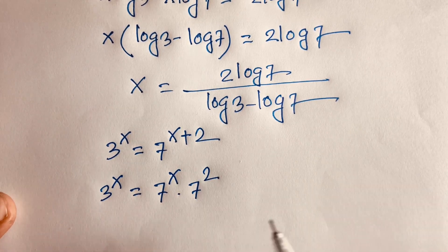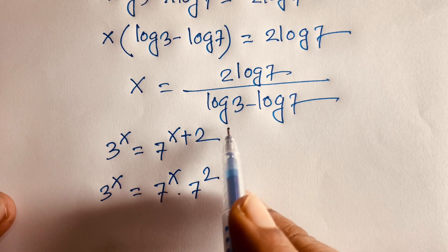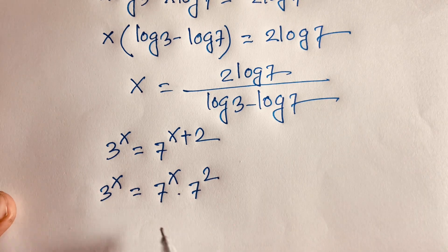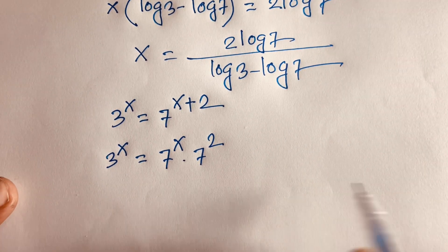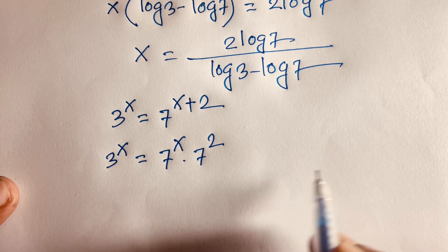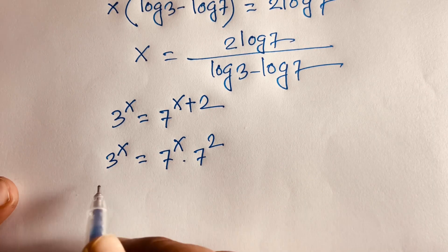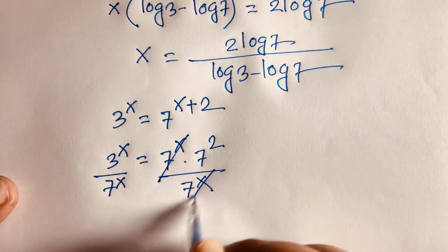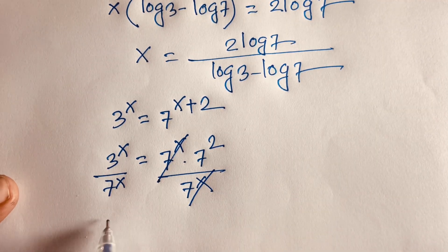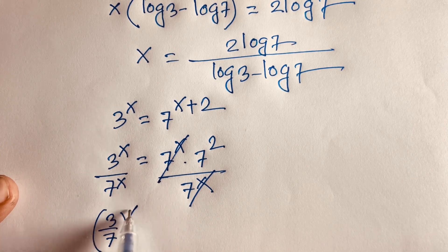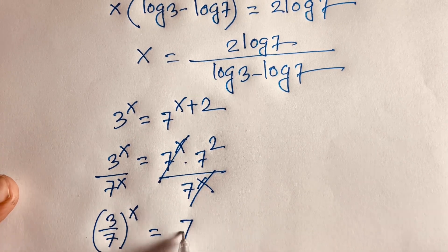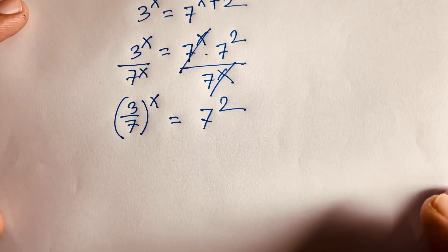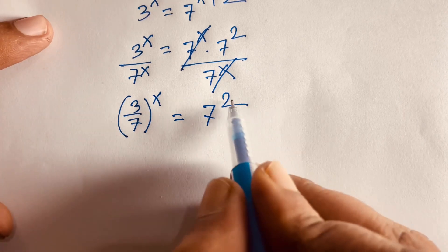Because we know that a to the power n plus m is equal to a to the power n times a to the power m. According to this rule, if I divide both sides by 7 power x, then 7 power x cancels and it will be 3 over 7, whole to the power x, is equal to 7 power 2.